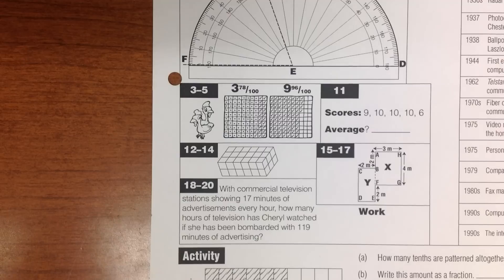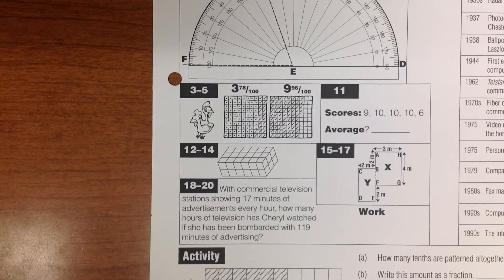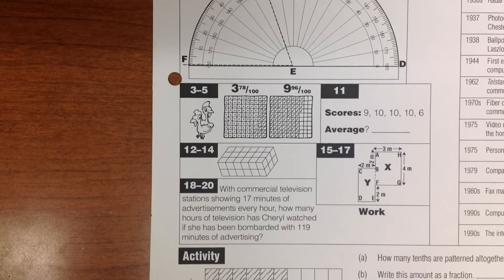Number 4. Carolyn Chicken ate nine whole cakes and 9/6 of a cake. Write what she ate as a mixed number. Carolyn Chicken ate nine whole cakes and 9/6 of a cake. Write the amount she ate as a mixed number.